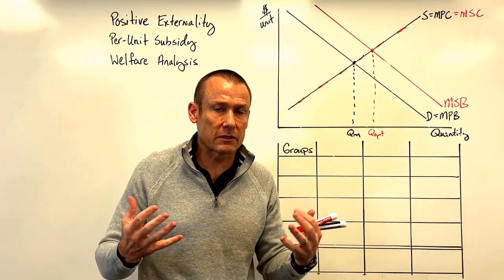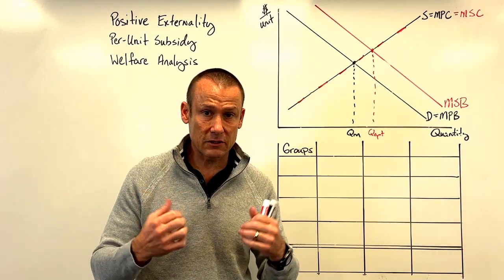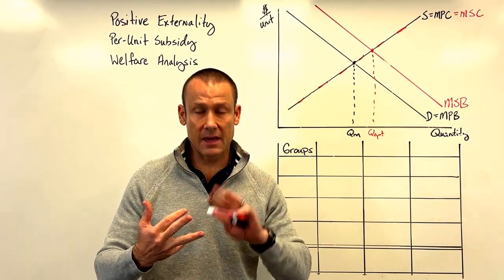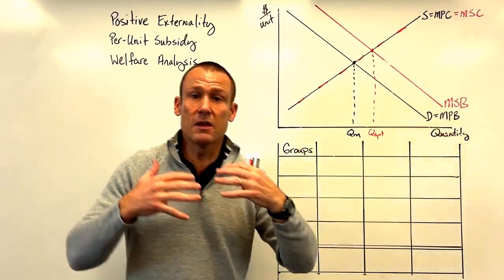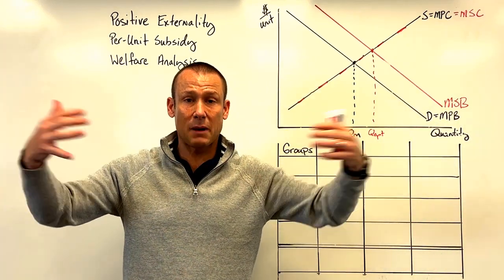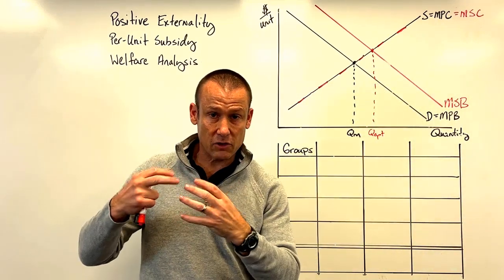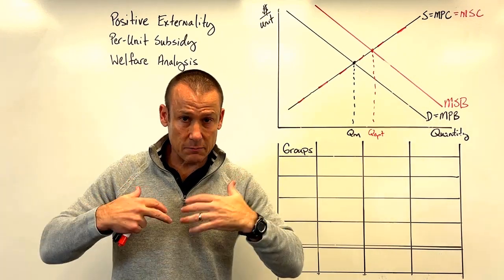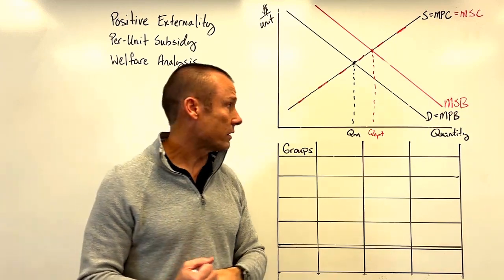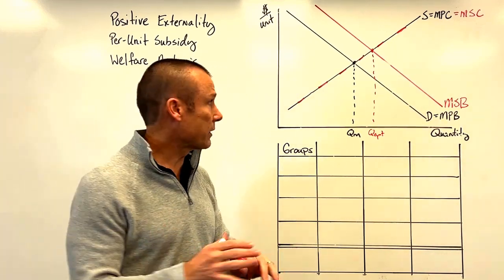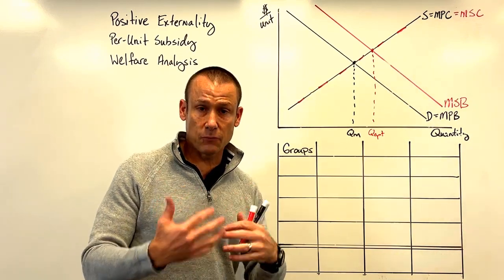What might this positive externality represent? My two go-to examples are education and healthcare. When somebody gets educated, they certainly get a private benefit, but there are also benefits to others from that person being educated — an external benefit not being internalized by the person being educated. That's why MSB is above MPB. Same idea applies to healthcare. So we've got Q-market and Q-opt, representing an under-allocation of resources if we leave the market alone.